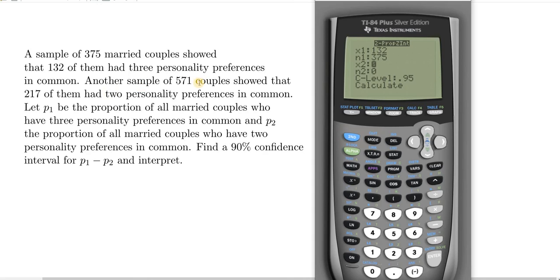The next sentence is the same. Another sample of 571 couples—that'll be our N2, and then our X2 would be 217.